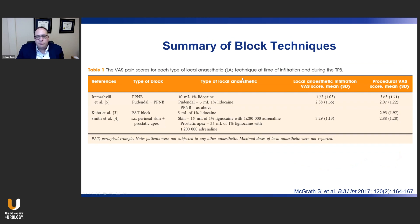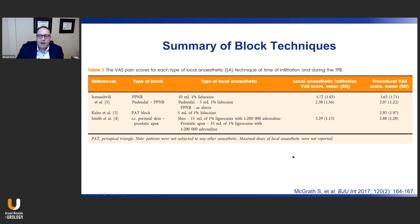What are the outcomes with these block techniques? A review article from the BJUI summarizes outcomes with the periprostatic nerve block, pudendal block, periapical triangle block, and prostate apex block. All of these blocks achieve adequate pain control both at the time of local anesthesia administration and during the prostate biopsy itself, with mean pain scores in the range of two to three — completely acceptable and allowing this procedure to be performed in the outpatient setting.